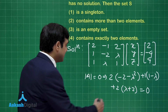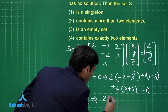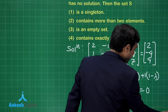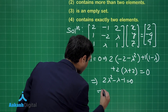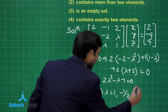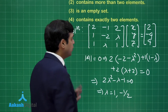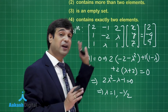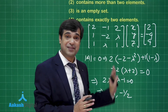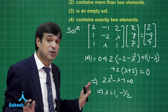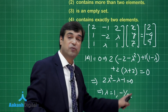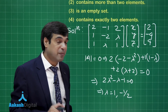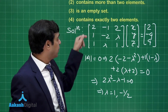Simplifying gives 2lambda² minus lambda minus 1 equals 0. Factorizing yields lambda equals 1 and lambda equals minus one-half. Substituting both values back, whether we replace the first, second, or third column, neither value gives a solution — so both values are valid and the system is inconsistent in both cases.